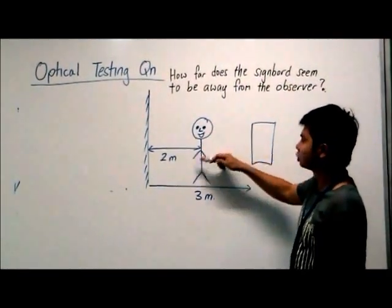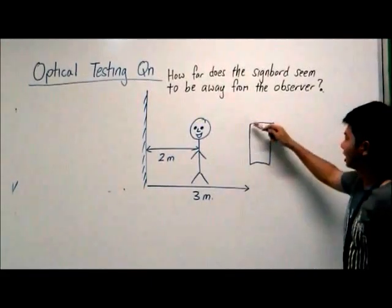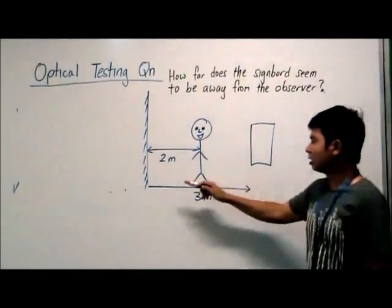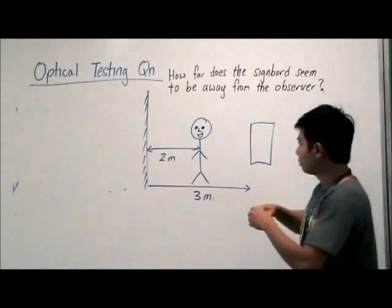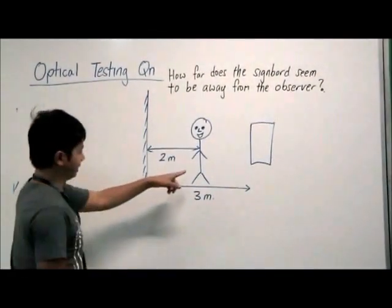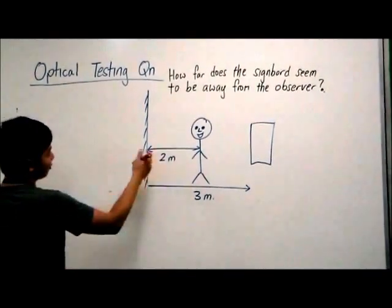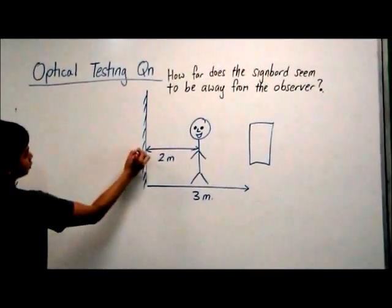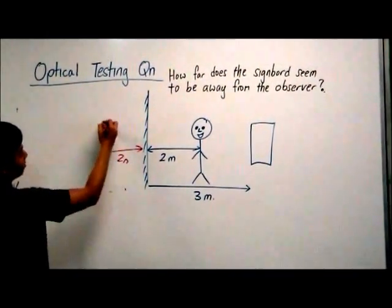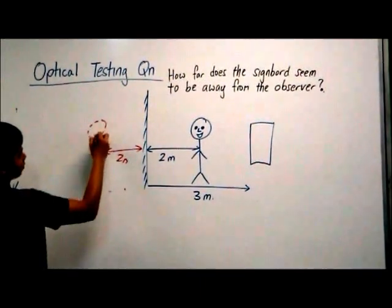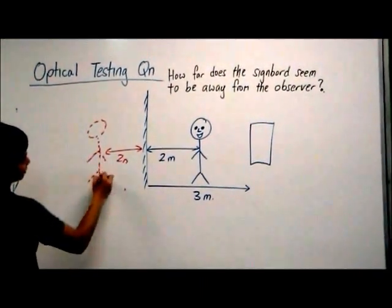I have an observer here that is 2 meters away from a mirror, and a signboard that is 3 meters away from the mirror. What we need to do is draw in the image. The observer will look as if it is 2 meters behind the mirror — so this is where the image of the observer will be.